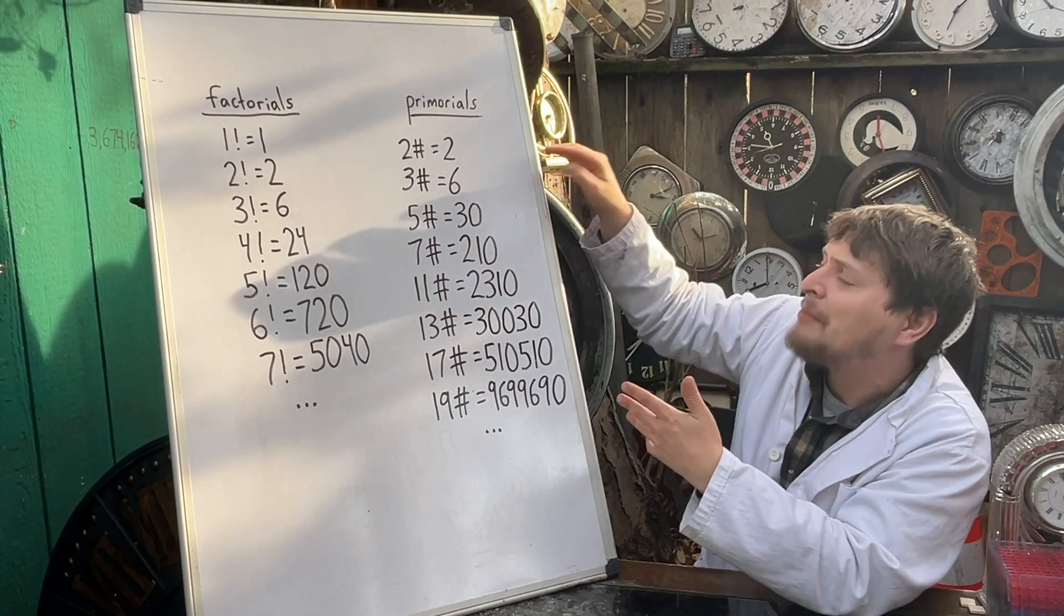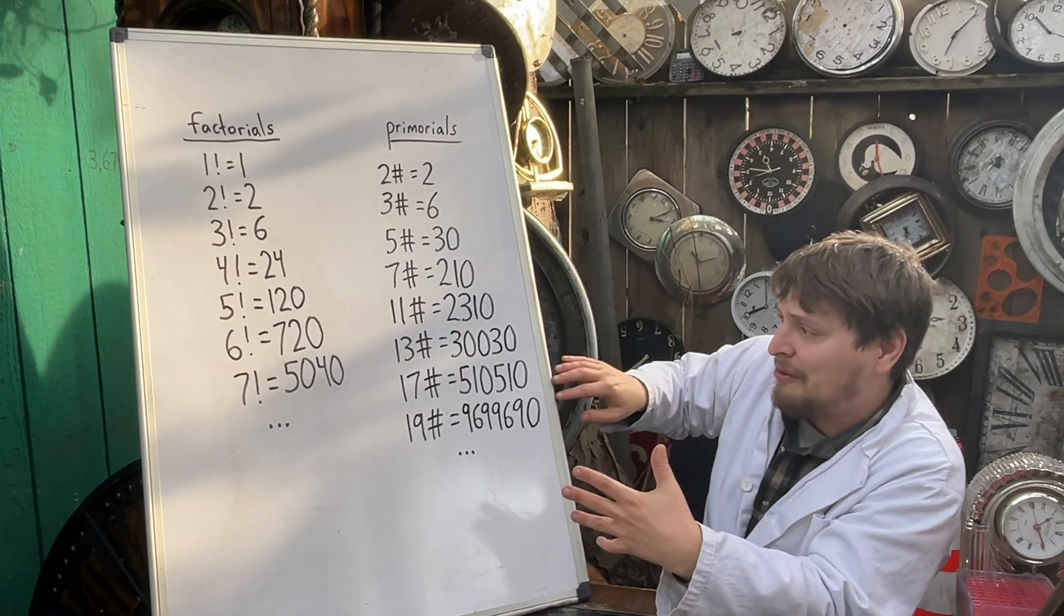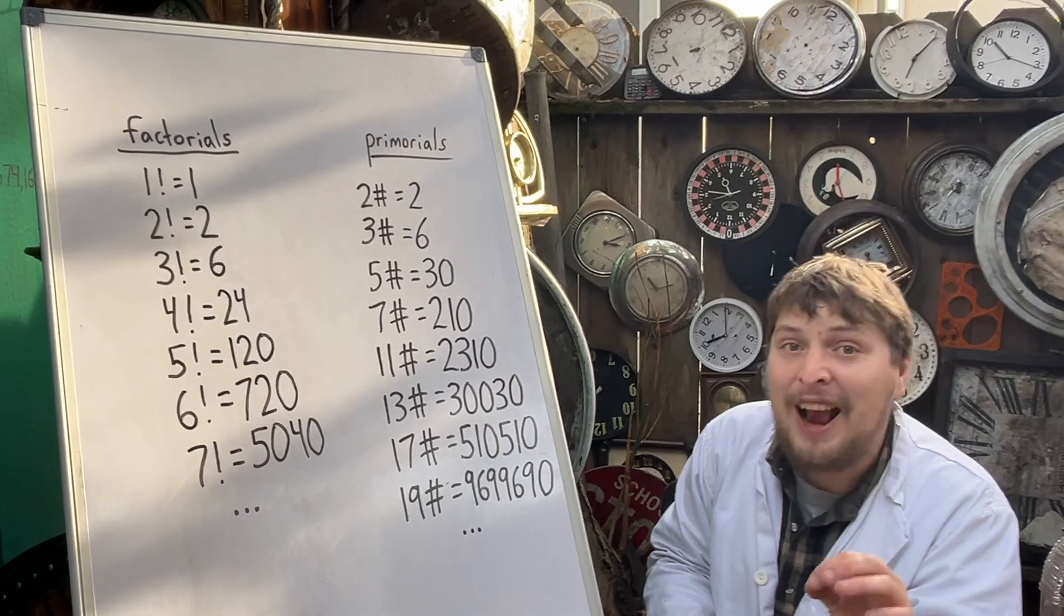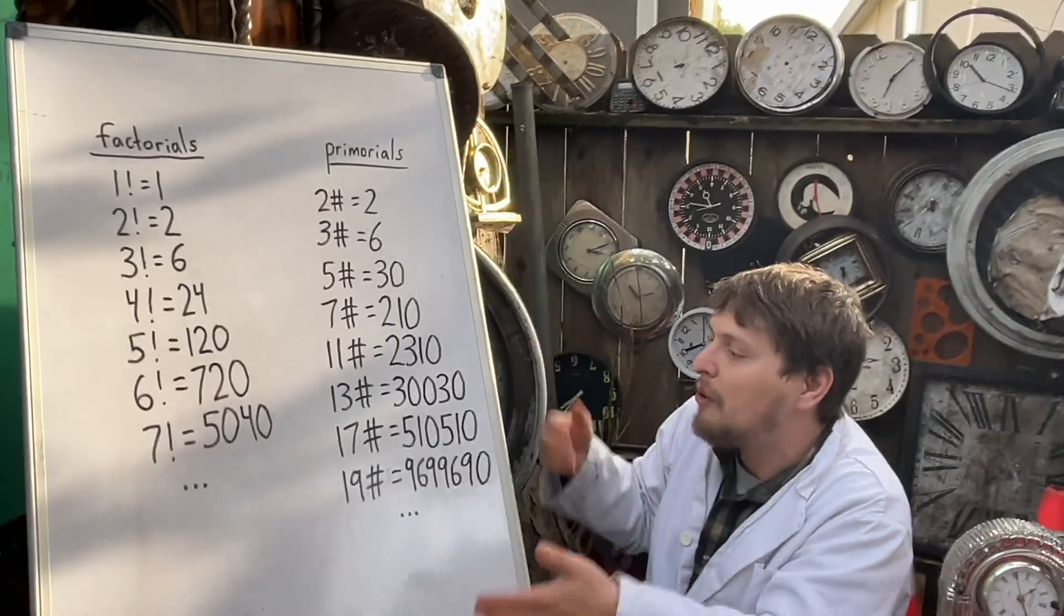And so in a basic base, we're going to get to a point where we get either no zeros, or one zero, and never anymore. No primorials can end in two or more zeros.